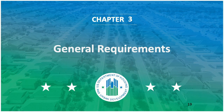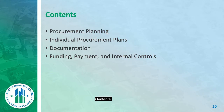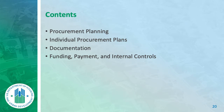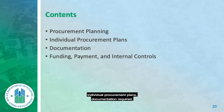Chapter three: General Requirements. Contents include procurement planning, individual procurement plans, documentation required, and funding, payment, and internal controls.